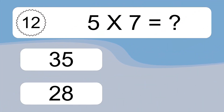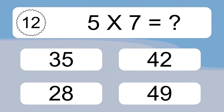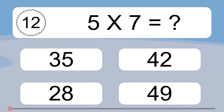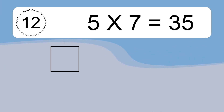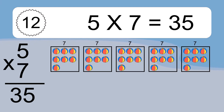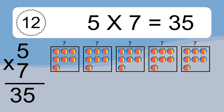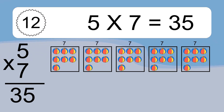5 times 7 equals what? 5 times 7 equals 35. We have 5 boxes and each box has 7 colorful balls inside. If you count all the balls in all the boxes together, you will have 5 times 7 balls. This equals 35 balls.